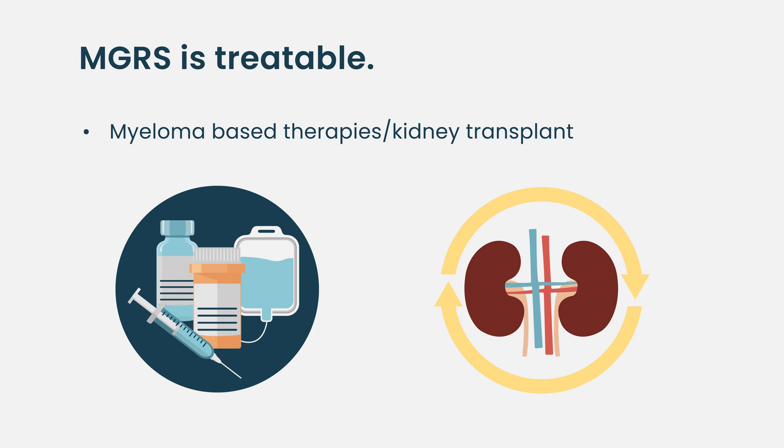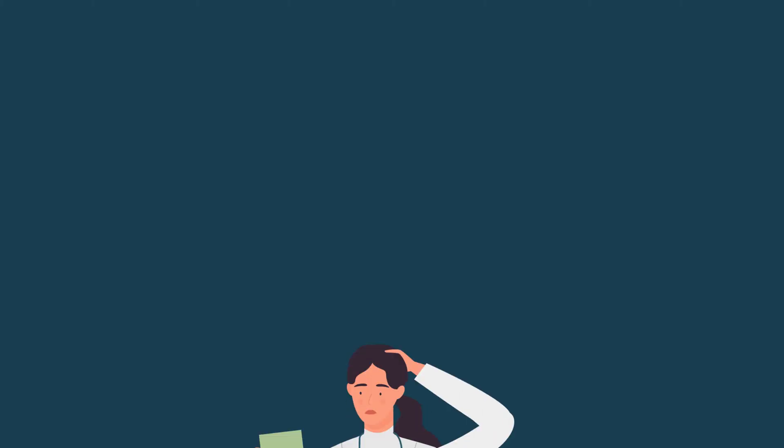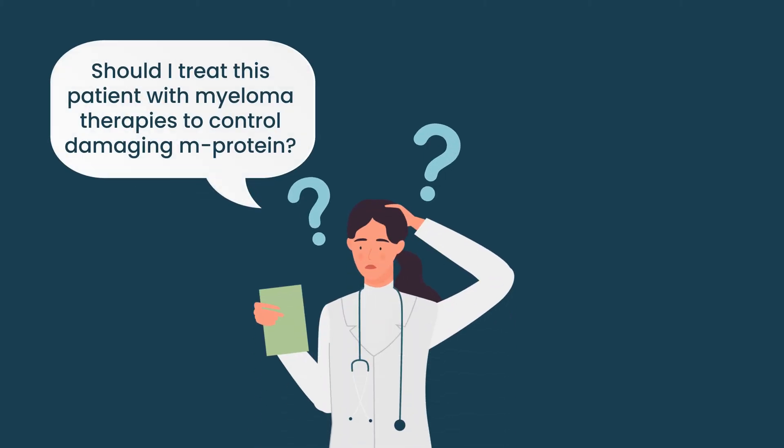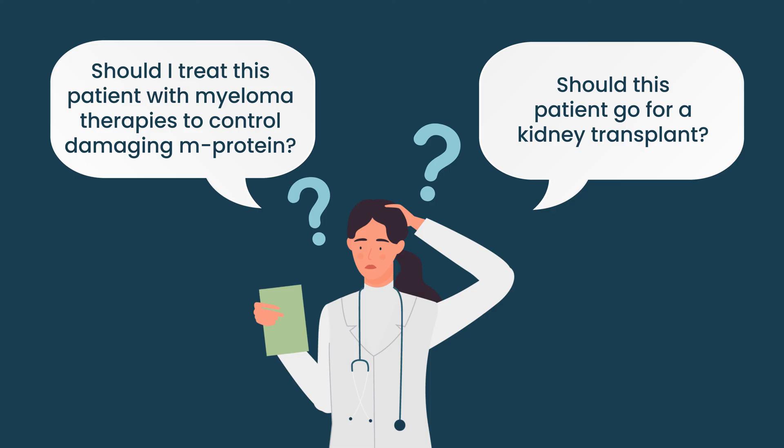The reason to get a kidney biopsy is to make a treatment decision: if the patient is in renal failure, do they need to go for a kidney transplant or not? If you are evaluating a patient with bad kidneys and you find an M spike, the next question is: do we need to treat the benign condition to control the protein causing kidney damage, or is the patient ready for a kidney transplant?